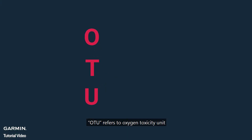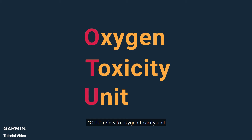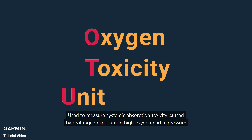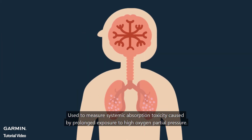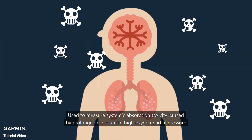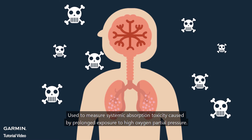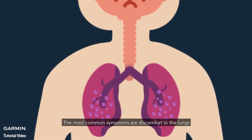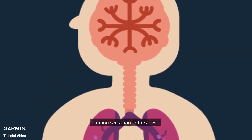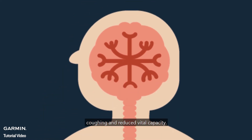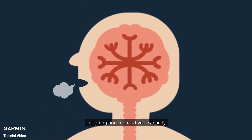OTU refers to oxygen toxicity unit, used to measure systemic absorption toxicity caused by prolonged exposure to high oxygen partial pressure. The most common symptoms are discomfort in the lungs, burning sensation in the chest, coughing, and reduced vital capacity.